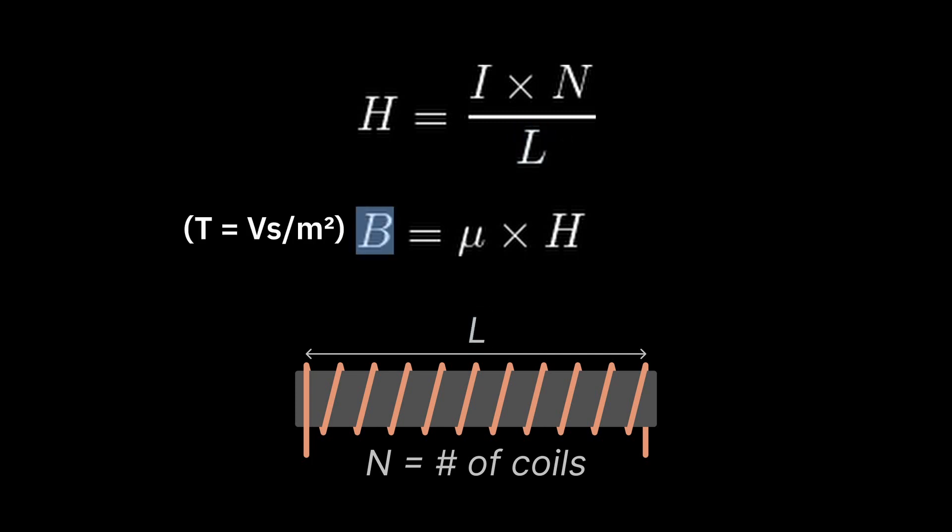B is the magnetic flux density, which we're measuring. Mu is a constant, which we don't need to worry about just yet. And H was, as previously mentioned, the field strength.